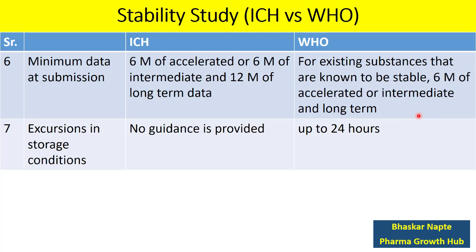Regarding excursion in storage condition — in case your stability chamber is out of order for some reason, how long can it be out of order? ICH provides no such guidance. However, WHO says up to 24 hours. Within 24 hours, you need to take corrective measures and ensure your stability chamber is functioning as expected, or transfer your samples into another suitable chamber with the same or similar condition.